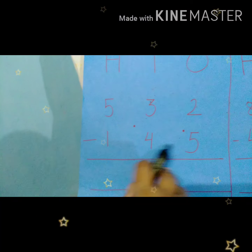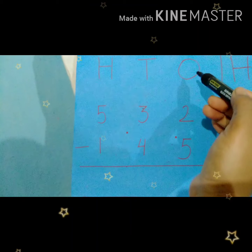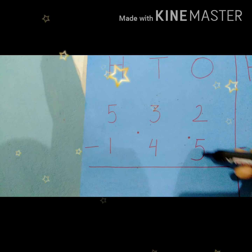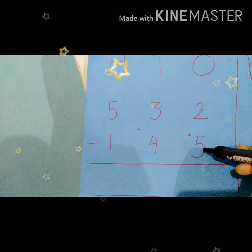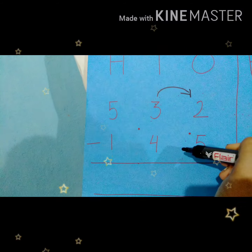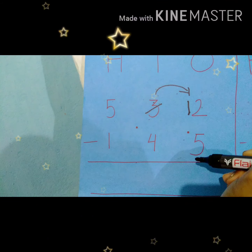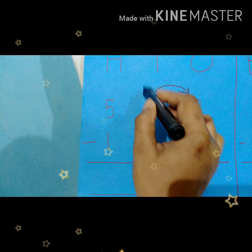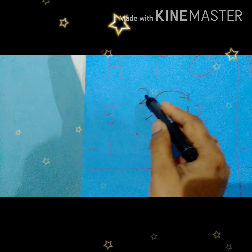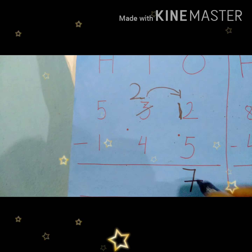Here we have 532 minus 145. We need to subtract 145 from 532. It is a 3-digit number — we have places 1's, 10's, and 100's. Again we will start from 1's place. Here we have 2 minus 5. 2 is smaller than 5, so we cannot subtract 5 from 2. Again we need to take 1 ten from 10's place — the number is 3 here. This 3 will give 1 ten, so 10 plus 2 will be 12. After giving 1 ten, the number left in 10's place will be 2. So we can write 2 now. 12 minus 5 is equal to 7. So we can write 7 here.